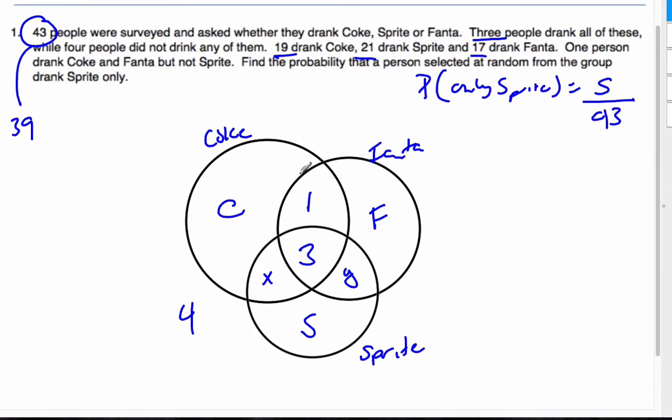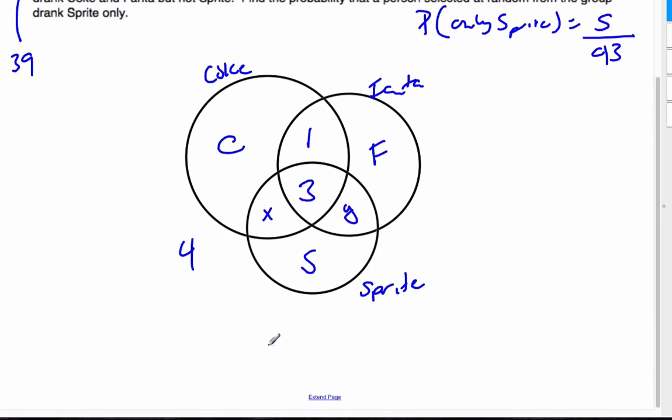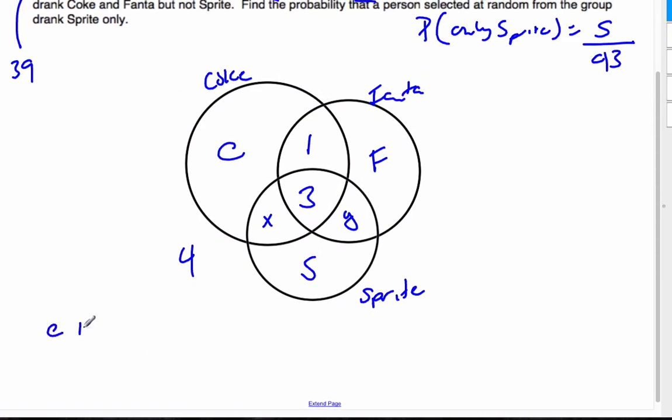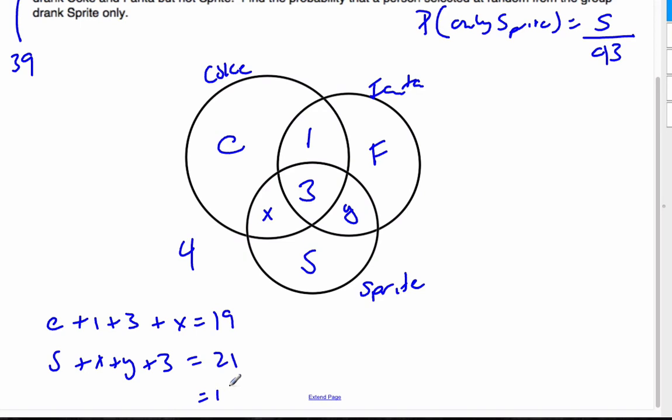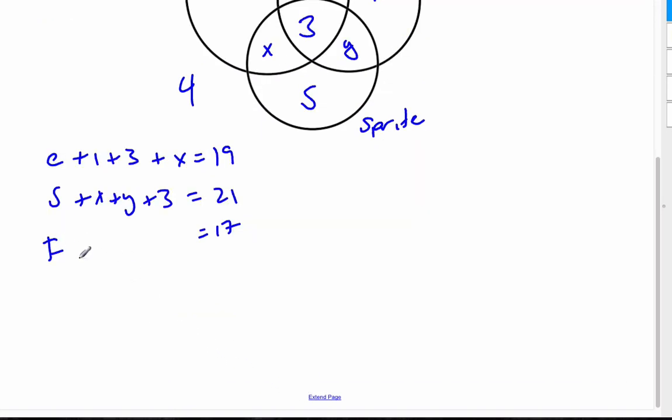So now, looking at this information, C plus X plus 3 plus 1 has to be 19. So I'm going to make a bunch of equations here and see what I get from there. So I know that C plus 1 plus 3 plus X is 19. Similarly, I'll do the same with the other two scenarios. So I know that S plus X plus Y plus 3 is equal to 21. And then the Fanta has 17, and that's going to be F plus 1 plus 3 plus Y.